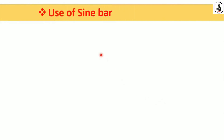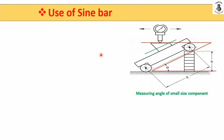Now, how to use a sine bar — this is an important part. Here is an example for measuring the angle of a small-size component. This is the small component whose angle I want to measure. This is my sine bar, and these square blocks are my slip gauges. Onto the surface plate, different sizes of slip gauges are placed, and one end of the setting rollers rests onto them, while the other roller rests onto the surface plate. The component is placed on the top surface of the sine bar.